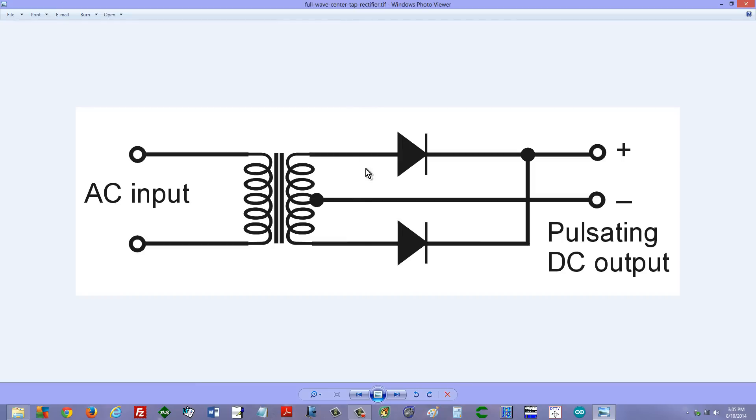However, when electrons are trying to flow with the arrow in this diode, they're flowing against the arrow in this one, so they will be able to get through. That means electrons will be able to escape from the positive terminal when the current is flowing up like that.